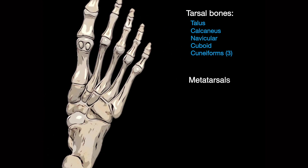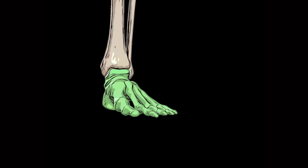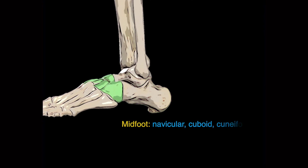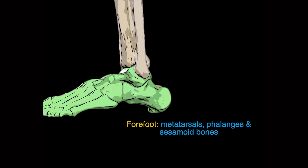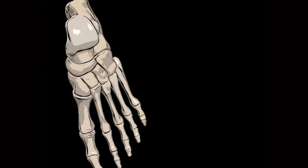The foot also includes the metatarsal bones and the phalangeal bones. Additionally, the big toe typically has sesamoid bones located on the distal underside of the first metatarsal. In the longitudinal or sagittal plane, the foot can be divided into three regions: the rear foot consisting of the talus and calcaneus, the midfoot incorporating all of the tarsal bones, and the forefoot.